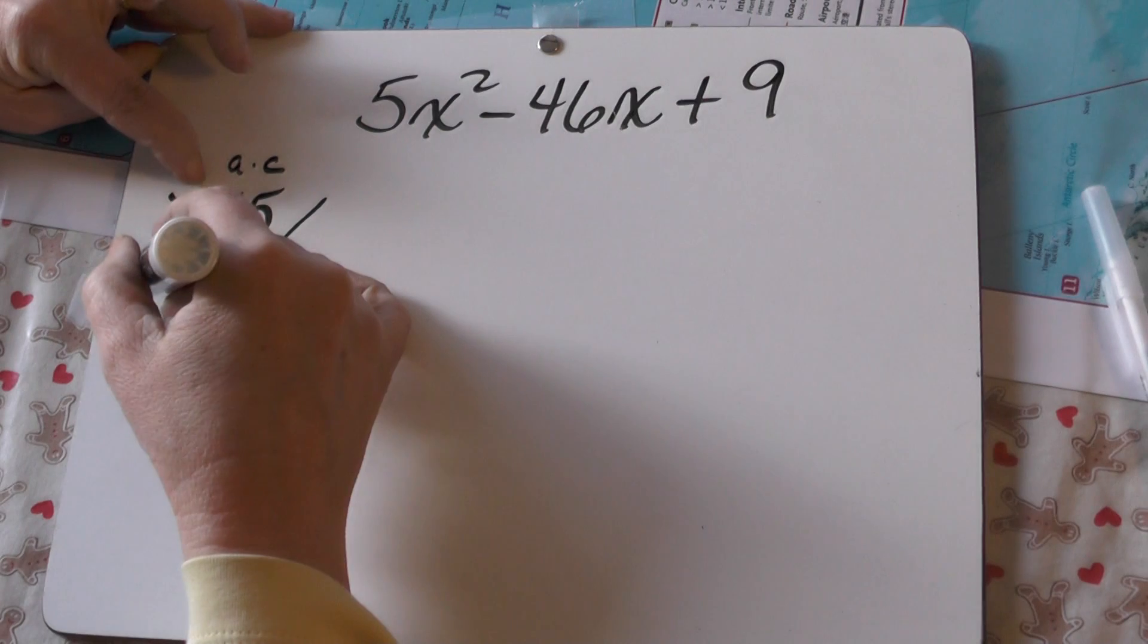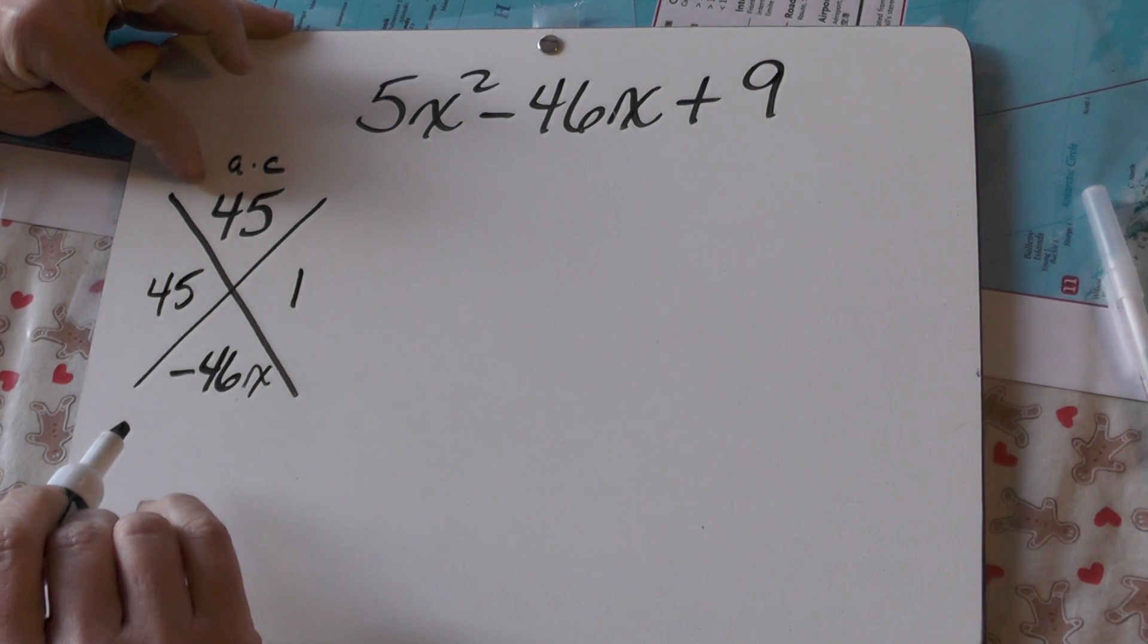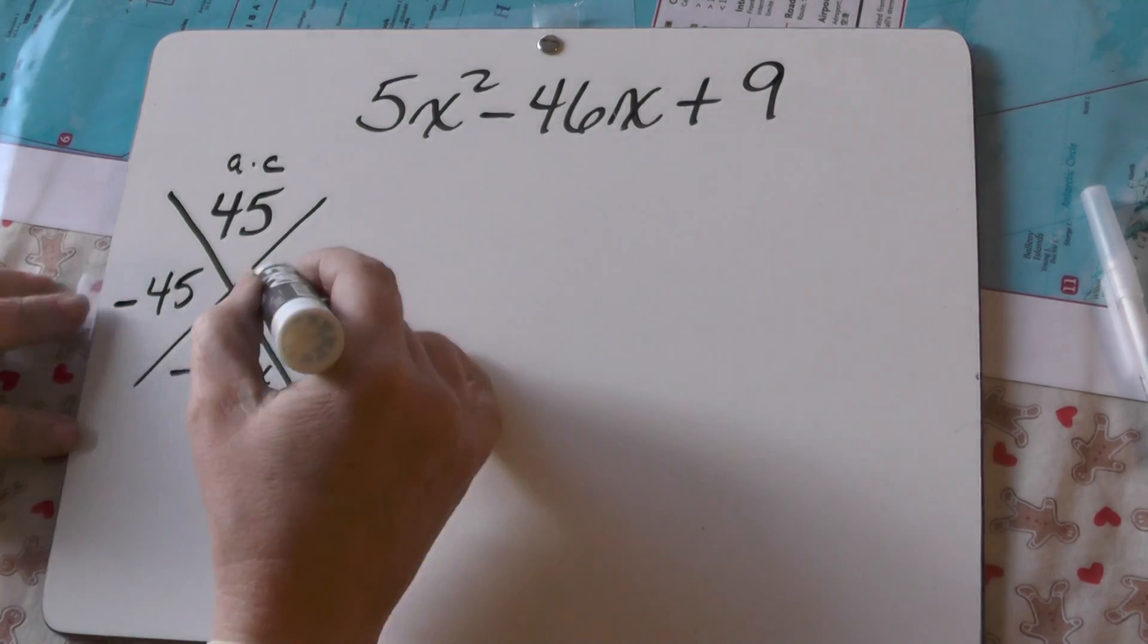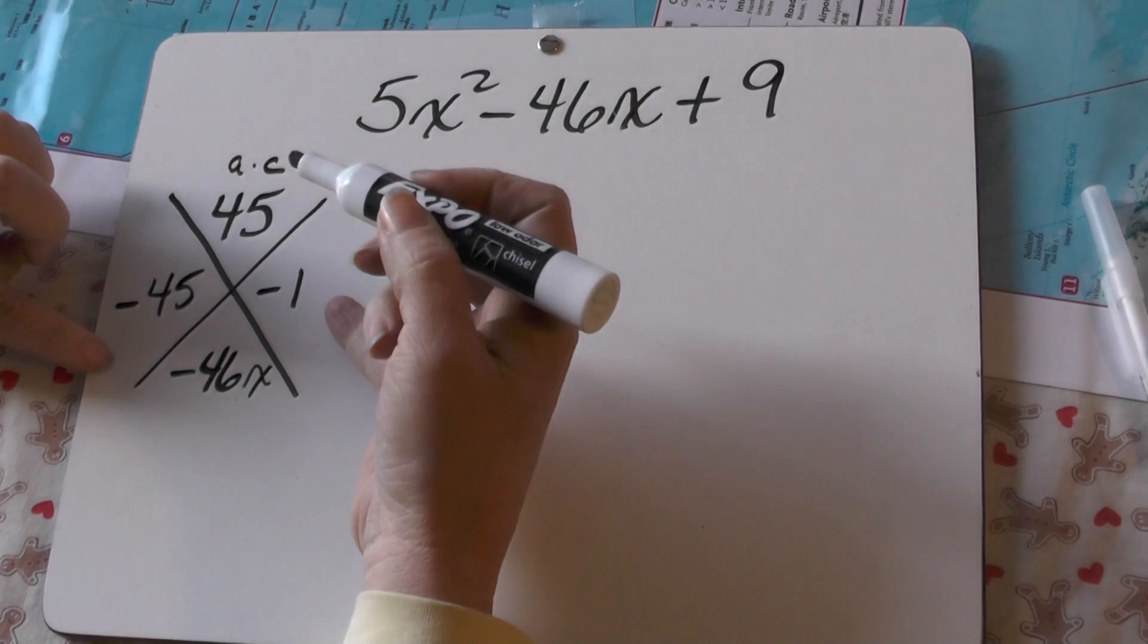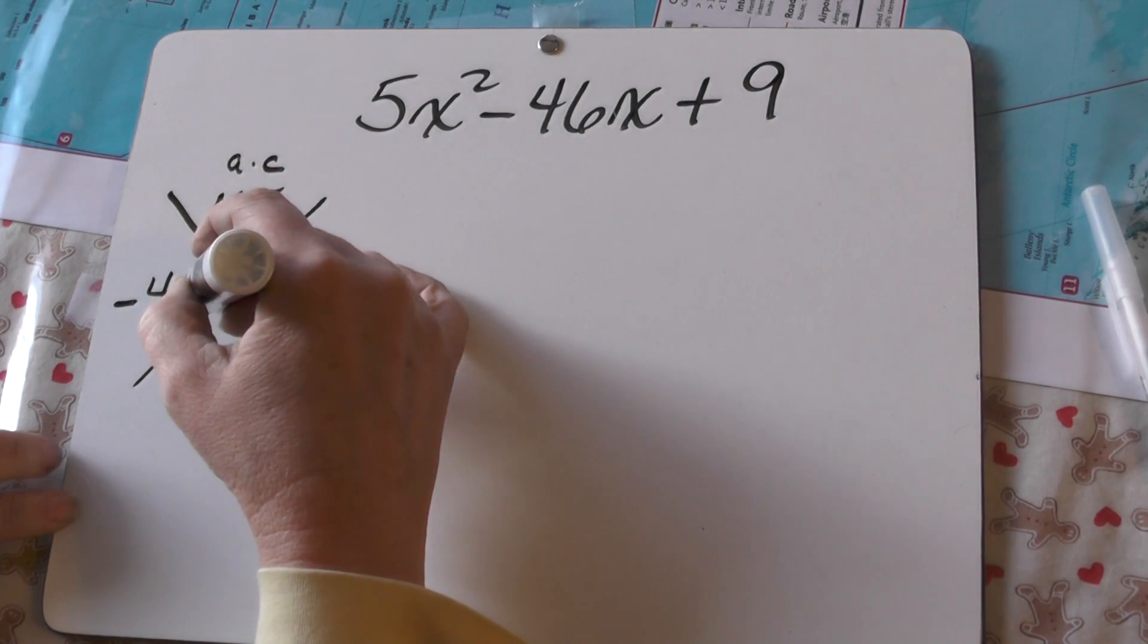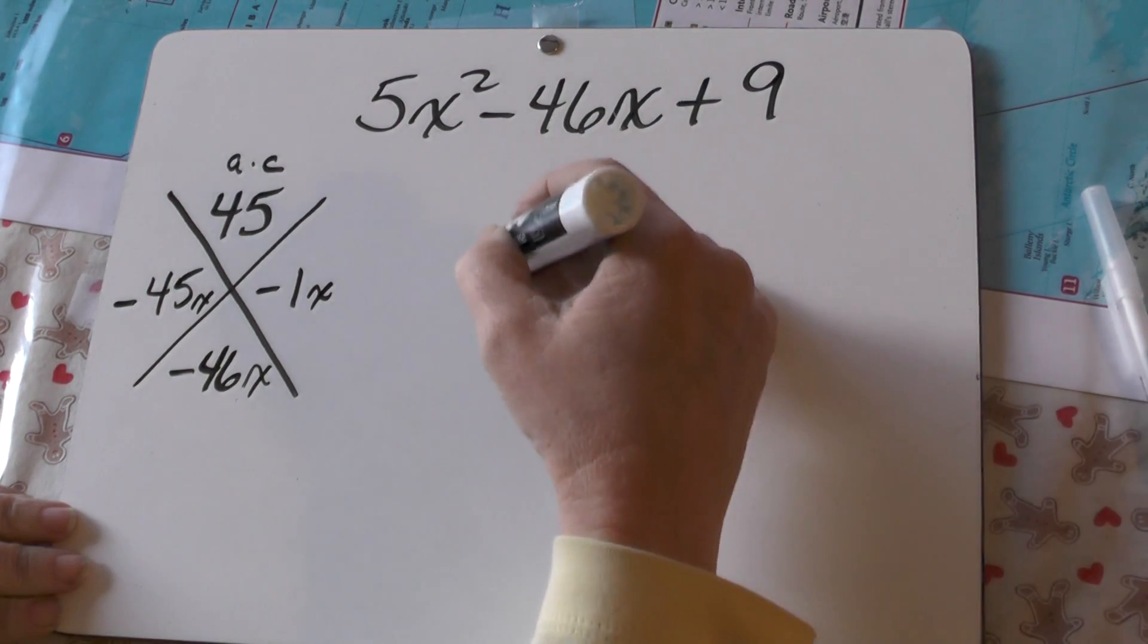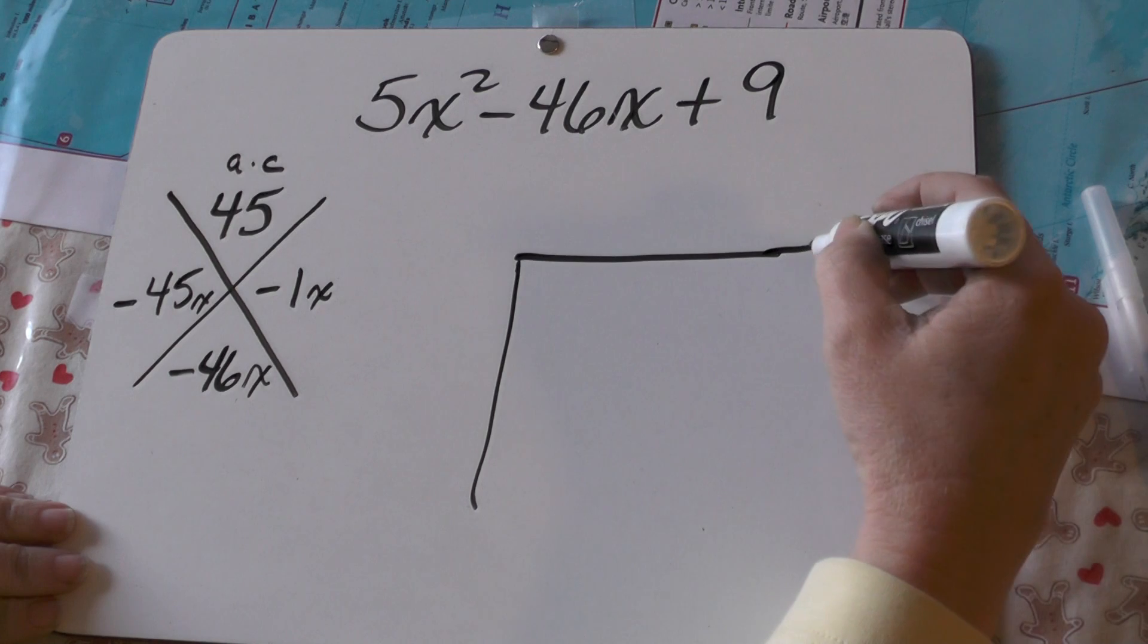So, what two factors of this are going to add up to this? Well, that was pretty easy. It's got to be 45 and 1, right? Double check the signs. Well, if I multiply negative 45 times negative 1, I get 45. If I add these together, I get negative 46. And, of course, we're going to have x's here.